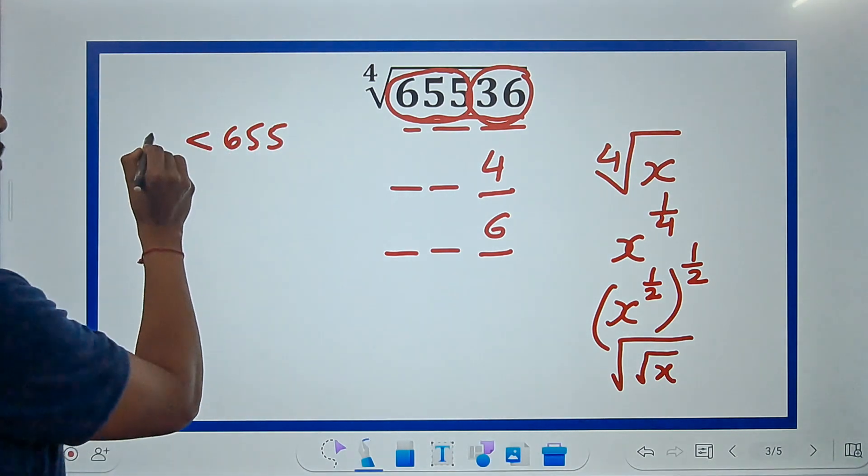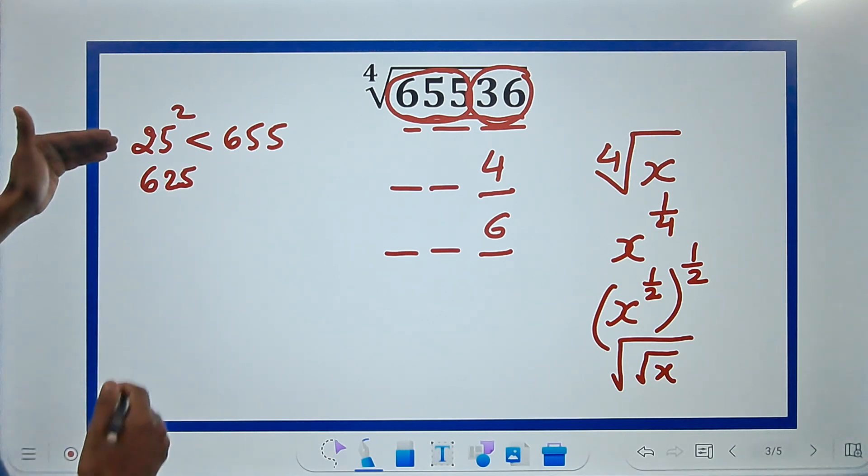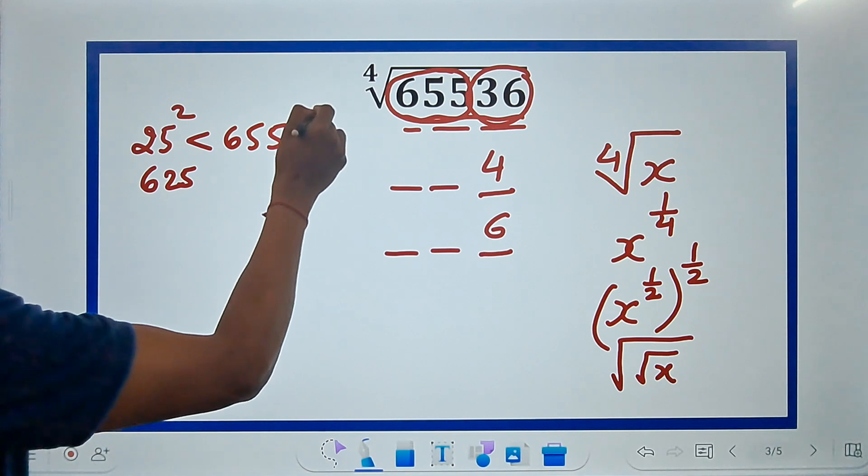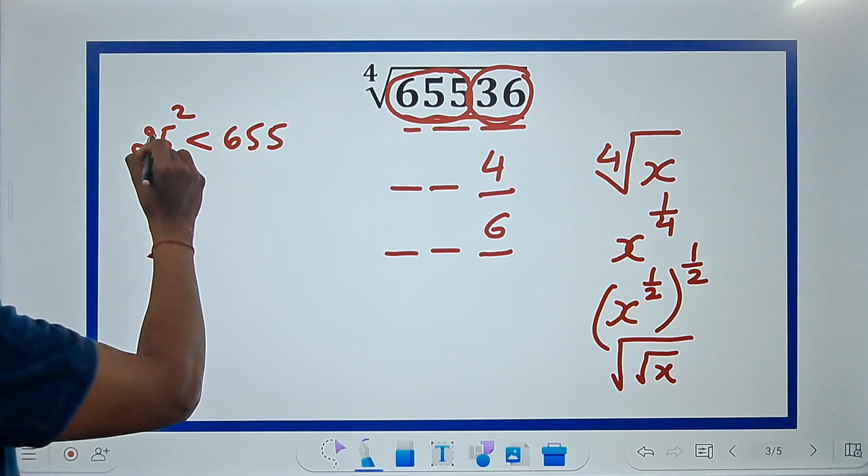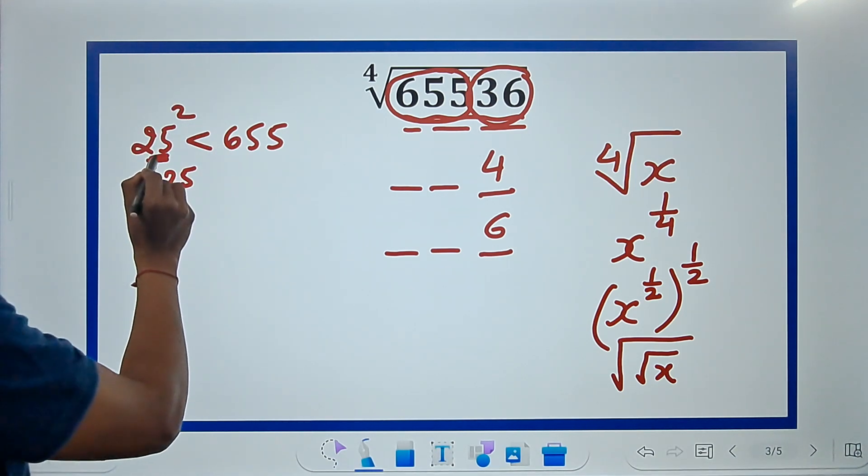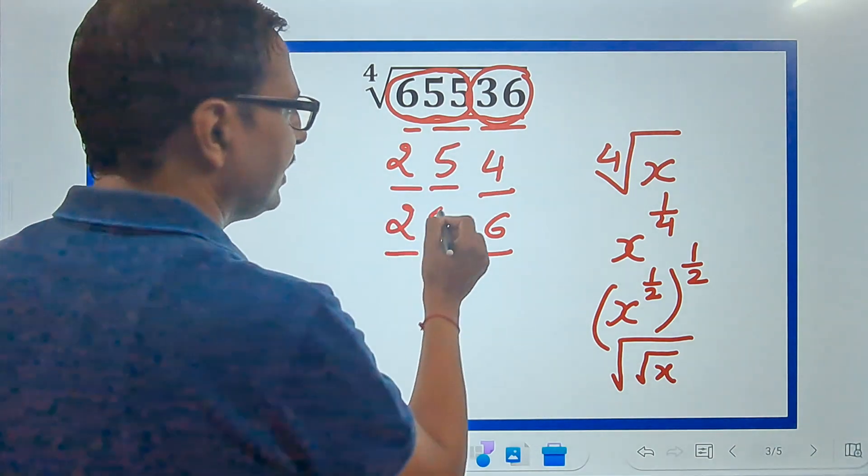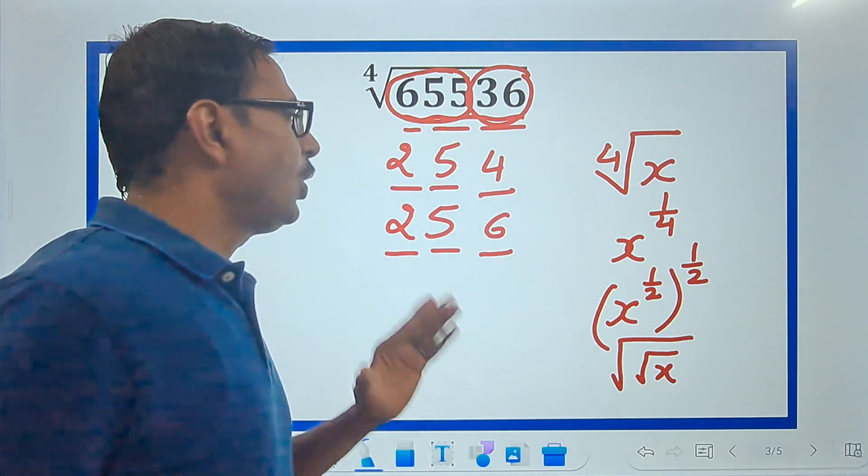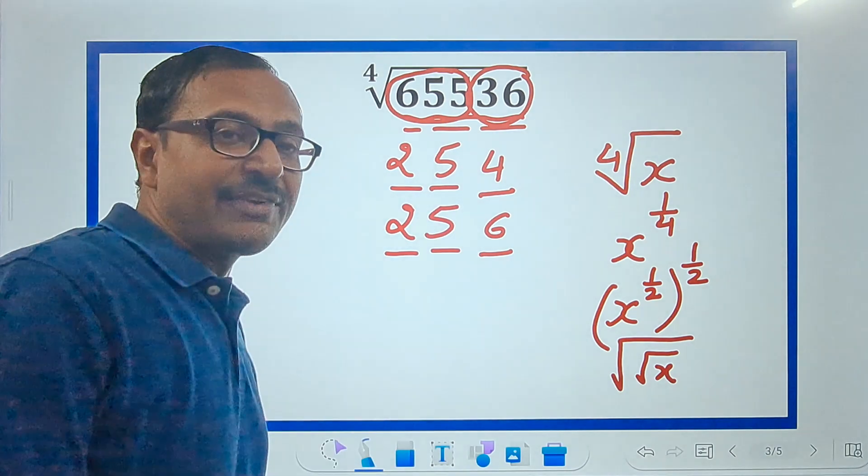The entire number here is 655, and 655 is greater than 25 square. 25 square is 625, and if you take 26 square it will be 676, which is greater than 655. I just want a number whose square should lie below 655, so that is 25. So the square root of this big number is either 254 or 256.